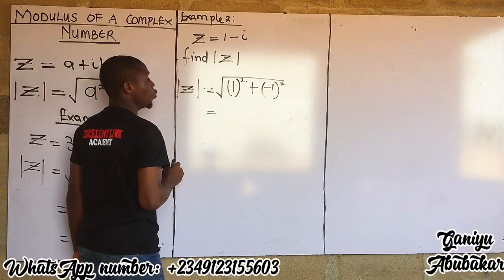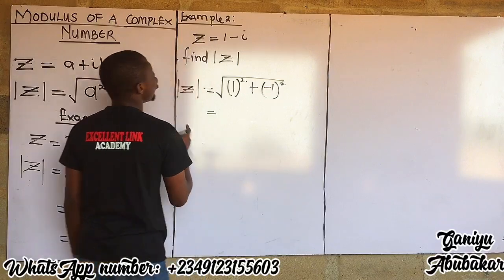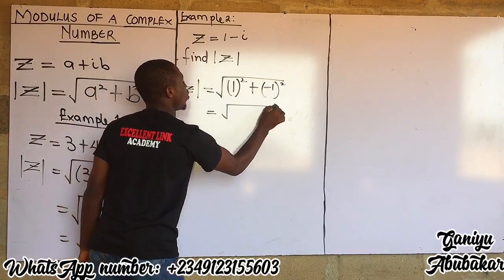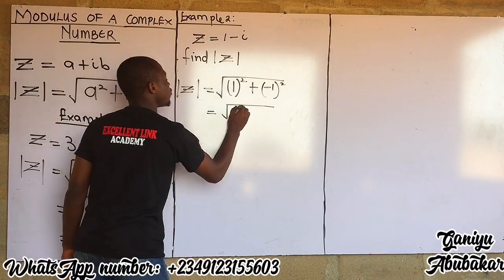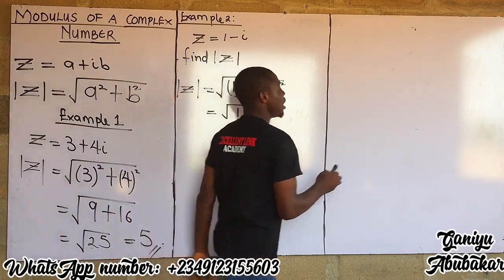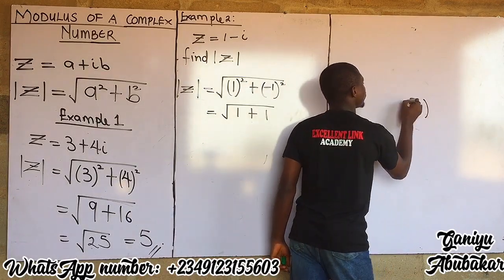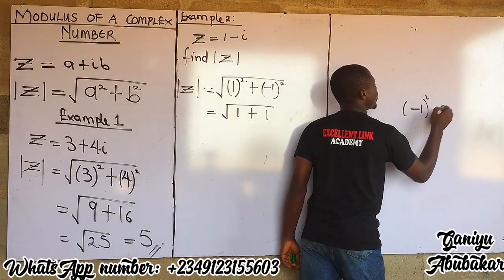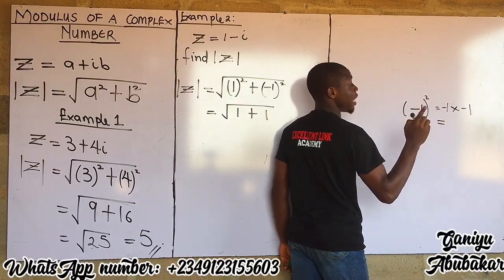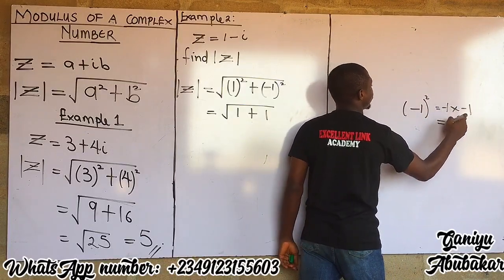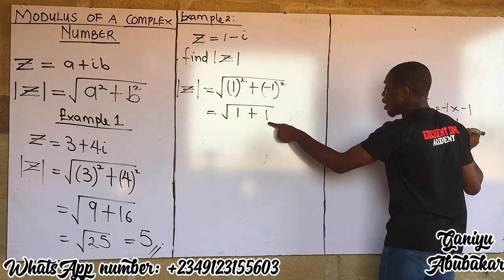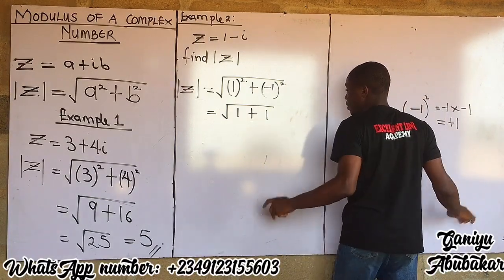The modulus is written as the square root of one squared giving one, plus minus one squared giving one. Minus one all squared means minus one multiplied by minus one — from the rule of signs, minus times minus gives plus, so one times one gives one. Therefore one and plus one are the same thing.